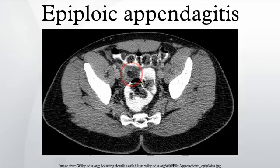Epiploic appendices are small, fat-filled sacs or finger-like projections along the surface of the upper and lower colon and rectum. They may become acutely inflamed as a result of torsion or venous thromboses.